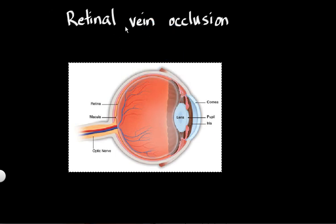So what is a retinal vein occlusion? Let's look at the words. We have retinal, which is the layer in the back of the eye; vein, which are blood vessels responsible for draining blood out of an organ or a tissue; and then occlusion, which is blockage. So basically, a retinal vein occlusion is a blockage of a vein that's responsible for draining blood out of the retina.